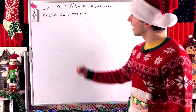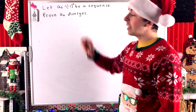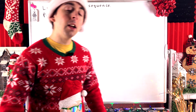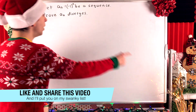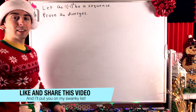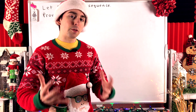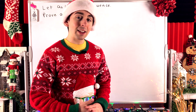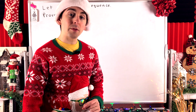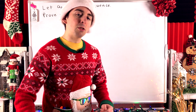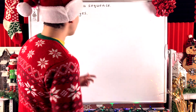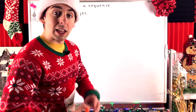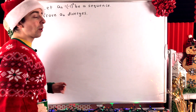We've got a fun exercise today. We'll be proving that the sequence a_n equals negative one to the power of n — the sequence of positive integer powers of negative one — diverges. This is our first example of a sequence that diverges but not to positive or negative infinity, which is what makes it a particularly fun exercise. Before we get into the proof, let's quickly think about why we would expect this sequence to diverge.